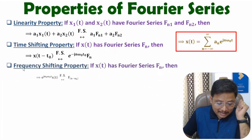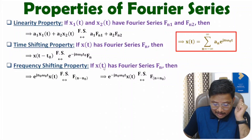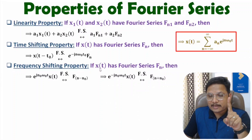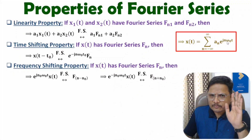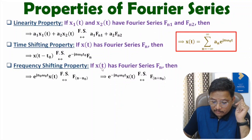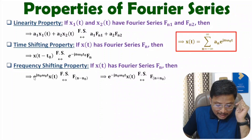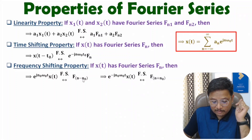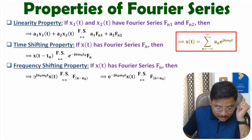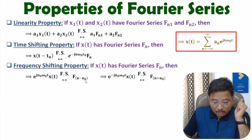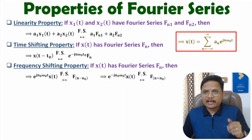Next is the frequency shifting property. Frequency is represented as nω₀, which is the frequency associated with x(t). If you want a frequency shift, you multiply x(t) by e to the power jn₀ω₀t; then in the Fourier series there will be a frequency shift giving f(n - n₀) instead of f(n). Note: multiplying by e^(+jn₀ω₀t) gives n - n₀, while multiplying by e^(-jn₀ω₀t) gives n + n₀.